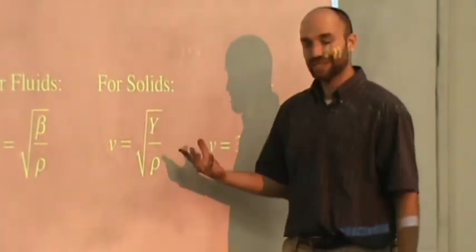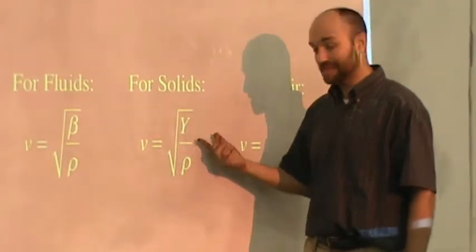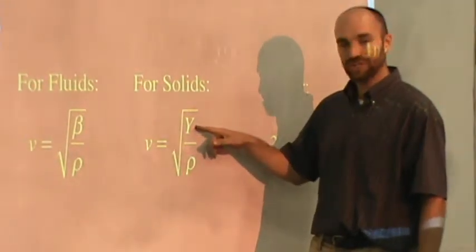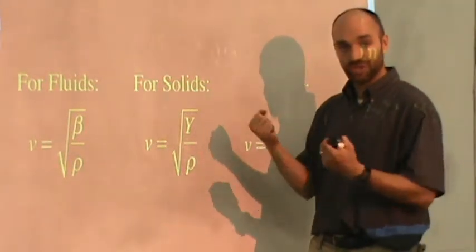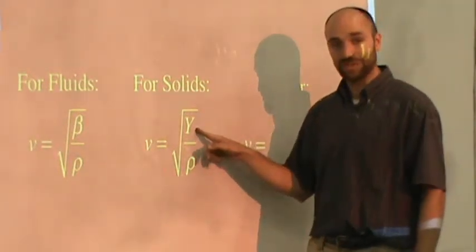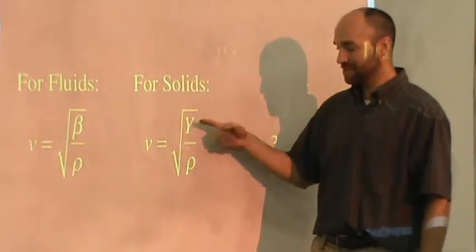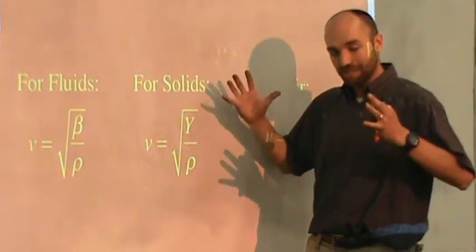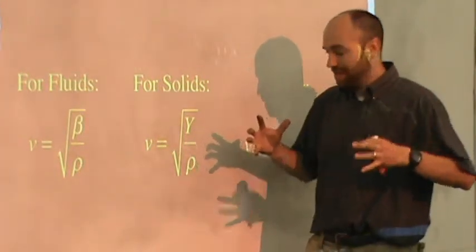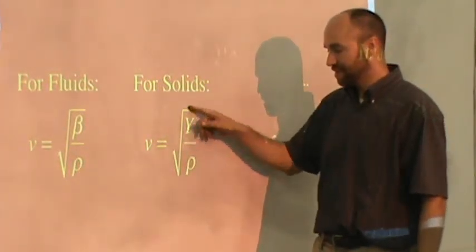For solids, guess what? You might think it's the same thing, and indeed it is, except we don't talk about solids in terms of compressibility. We usually talk about them in terms of how much they stretch or compress. And this is the Young's modulus that we talked about just a couple chapters ago. So this is the same equation. The Young's modulus describes how easily the metal is compressed or expanded divided by the density take square root.